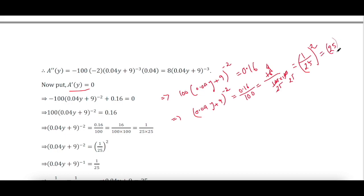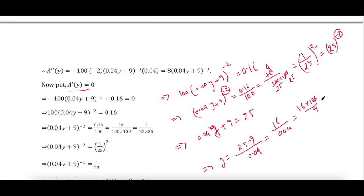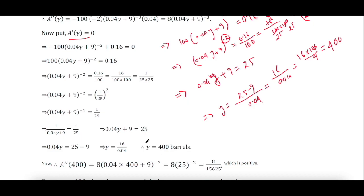So (0.04y + 9) to the power negative 2 equals 25 to the power negative 2. Since the powers are the same, we can equate the bases: 0.04y + 9 equals 25. This implies y equals (25 minus 9) divided by 0.04, which equals 16 times 100 divided by 4, giving y equals 400.